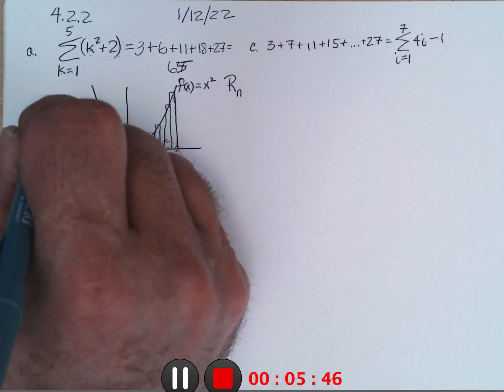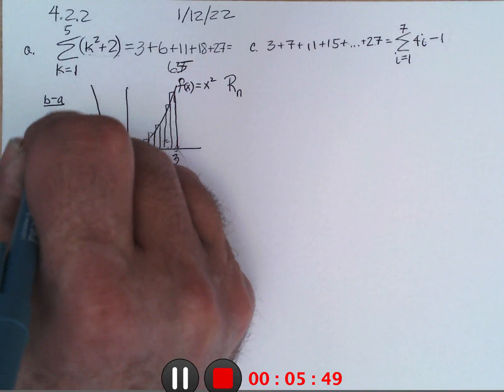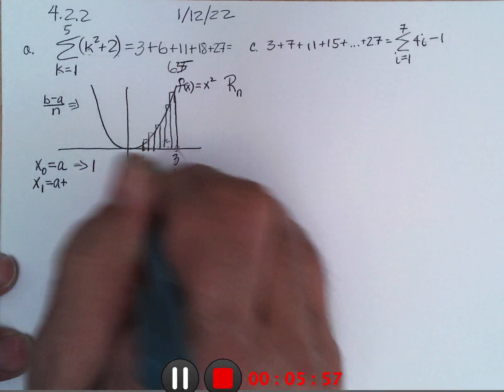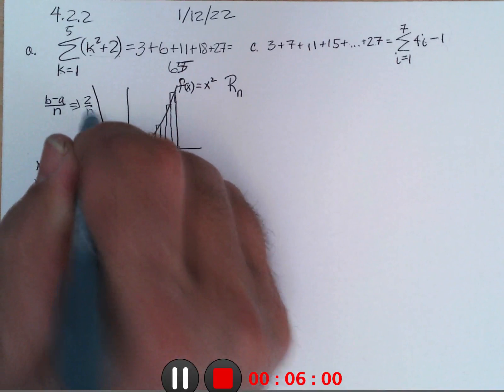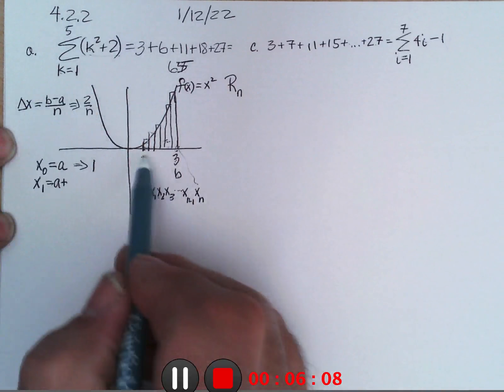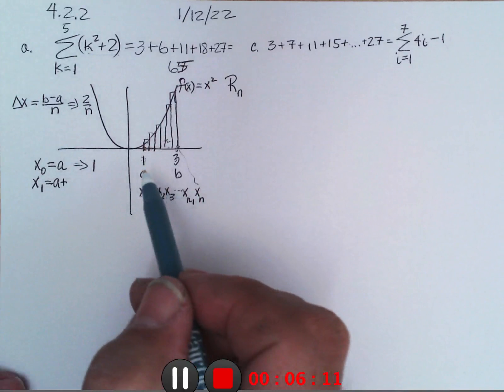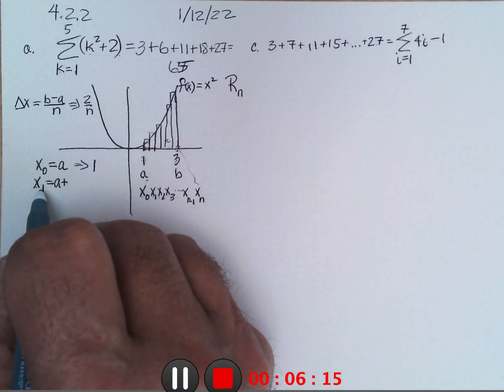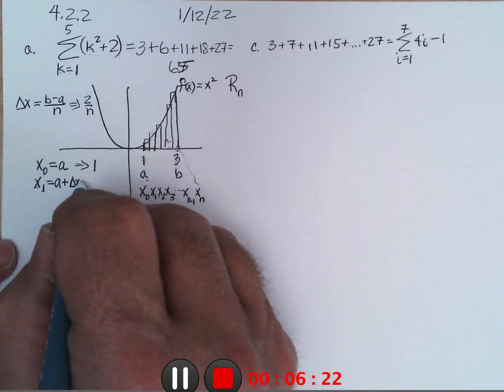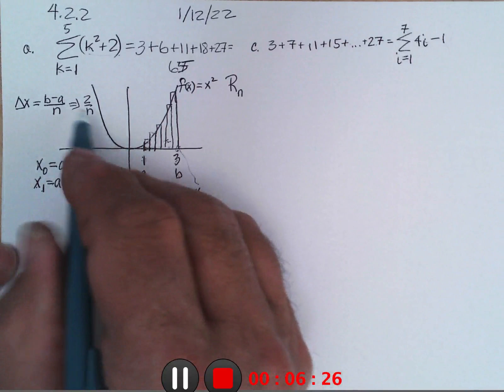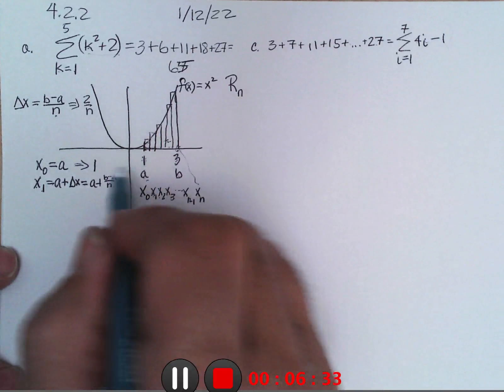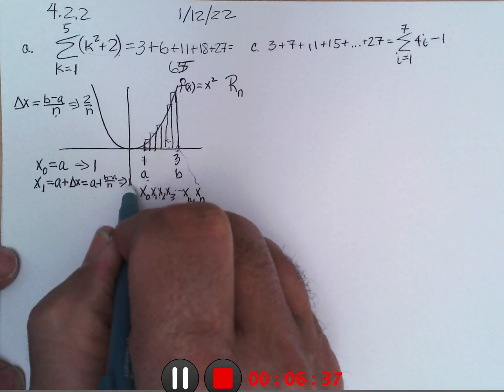I would take the distance from 1 to 3, that would be 3 minus 1 or b minus a, and divide it by n. And in this particular case, it would be 3 minus 1 which is 2 divided by n. And the book uses the notation delta x to describe the width of each of these rectangles.